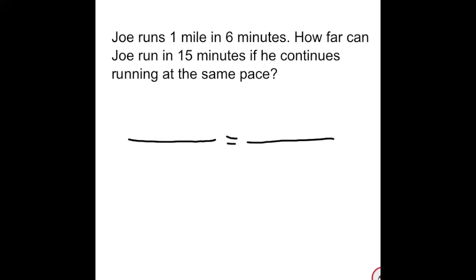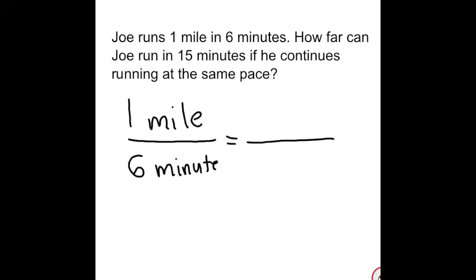What I like to do is throw the information right into the proportion. So first I know Joe runs one mile, and he runs that one mile in six minutes. They also tell us how far can Joe run in 15 minutes, so we know we're working with 15 minutes.